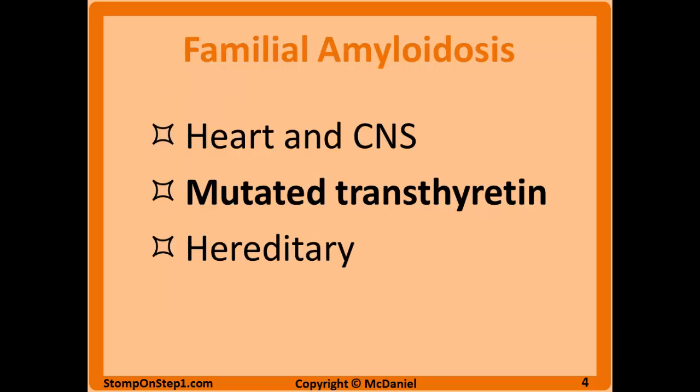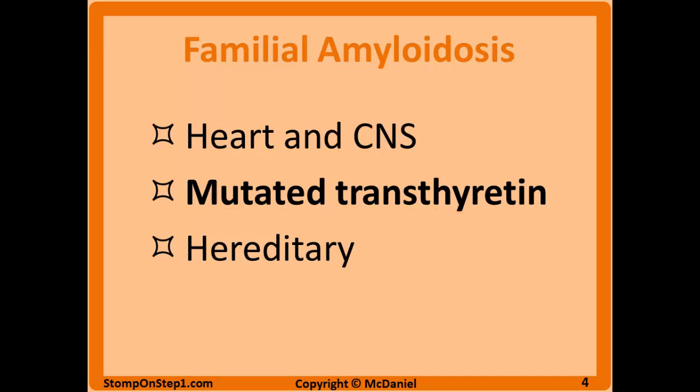Familial amyloidosis is not systemic. It's generally limited to the heart and the CNS, and it's an aggregate of a mutated type of transthyretin. Transthyretin is sort of a cousin of albumin, and a certain inherited mutation to transthyretin makes it more likely to aggregate and form amyloid. It's the only type of amyloidosis covered here that is hereditary.